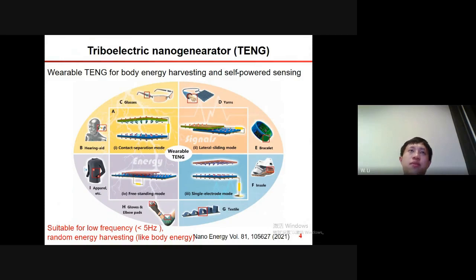The triboelectric nanogenerator, called TENG, invented in 2012, based on the contact electrification and electrostatic induction effect. It's an emerging technology for energy harvesting and self-powered sensing, especially for low frequency energy, the frequency less than 5 Hertz, and random energy harvesting, such as body motion energy.